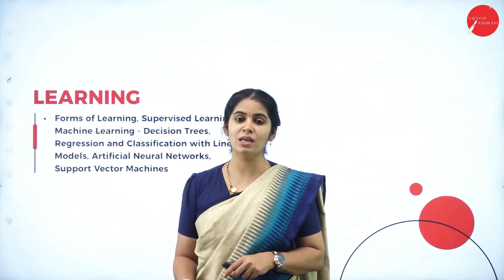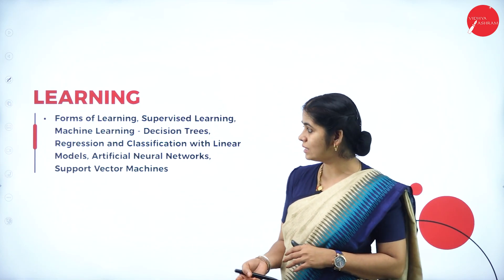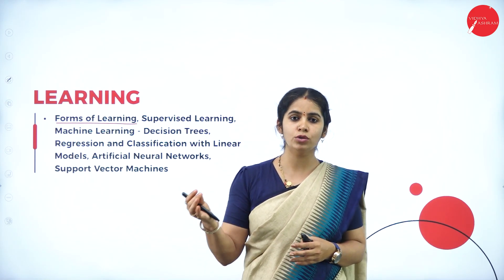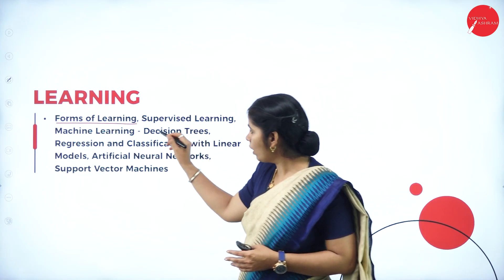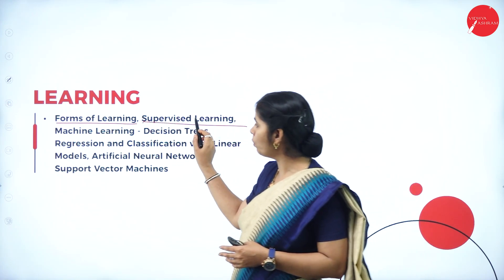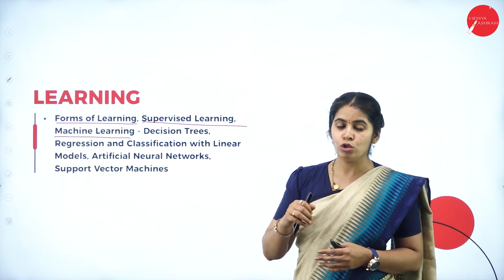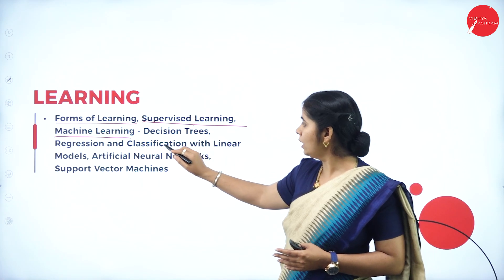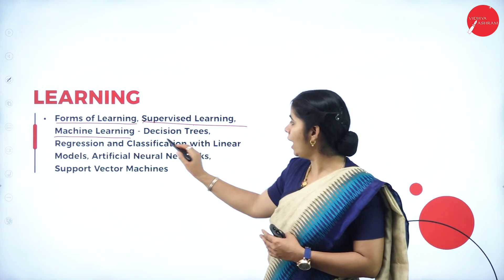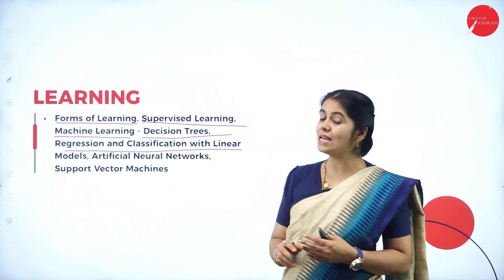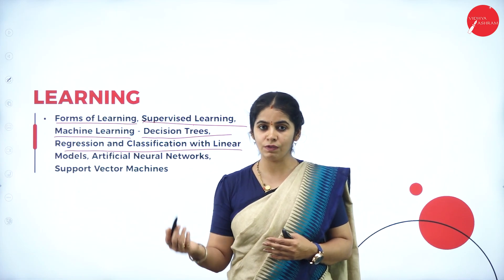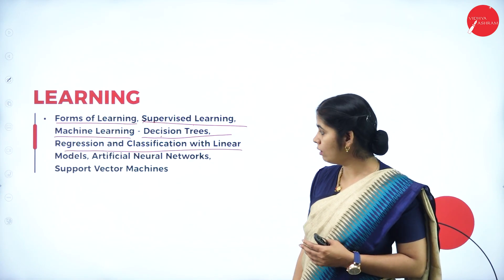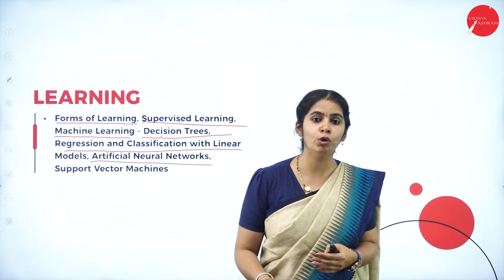In unit 4, we discuss learning — how a machine learns by itself. There are three main forms of learning: supervised learning, unsupervised learning, and reinforcement learning. We concentrate on supervised learning, where someone supervises what the machine is learning. We discuss how machine learning is achieved with the help of decision trees, regression, and classification of linear models.